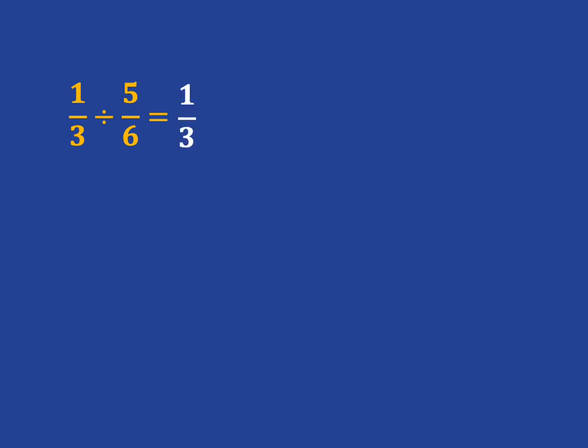We keep the one-third the same, we flip the five-sixths so it becomes six-fifths, and we change division to multiplication. And then we've just got multiplication to do, which we know how to do well, we do that as normal, and we get our answer two-fifths.